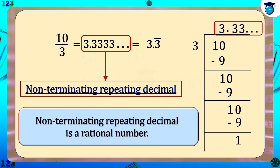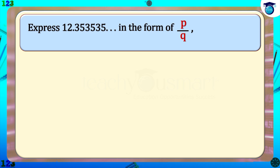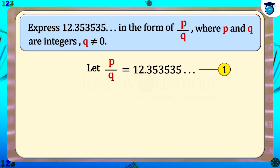Let's see how we can convert a non-terminating repeating decimal number to p by q form. Express 12.353535... in the form of p by q, where p and q are integers and q is not equal to zero. Let p by q equal 12.353535... — this is equation 1. Look at the digits after the decimal point. How many digits after the decimal point are repeated? Yes, two digits are repeating — which are the digits 3 and 5.